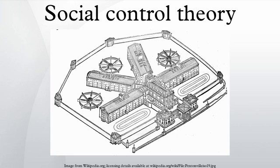Another early form of the theory was proposed by Albert J. Reiss, who defined delinquency as behavior consequent to the failure of personal and social controls. Personal control was defined as the ability of the individual to refrain from meeting needs in ways which conflict with the norms and rules of the community, while social control was the ability of social groups or institutions to make norms or rules effective. Reiss did not specify the sources of such abilities, nor the specific control mechanisms leading to conformity, but asserted that the failure of primary groups such as the family to provide reinforcement for non-delinquent roles and values was crucial to the explanation of delinquency. Reiss also wrote extensively on the application of his work to criminology.